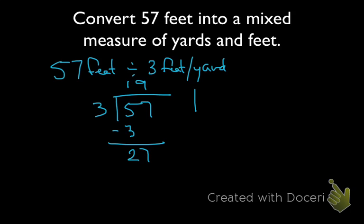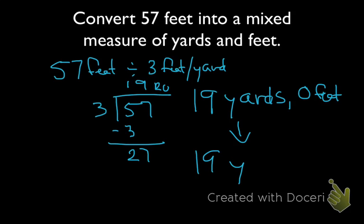So we are left with 19 yards, and there's a remainder of 0. 19 yards, 0 feet. And we can, of course, simplify that to just 19 yards because there's really no point in adding in 0 feet. But it's nice to keep in mind just in case we had a remainder.